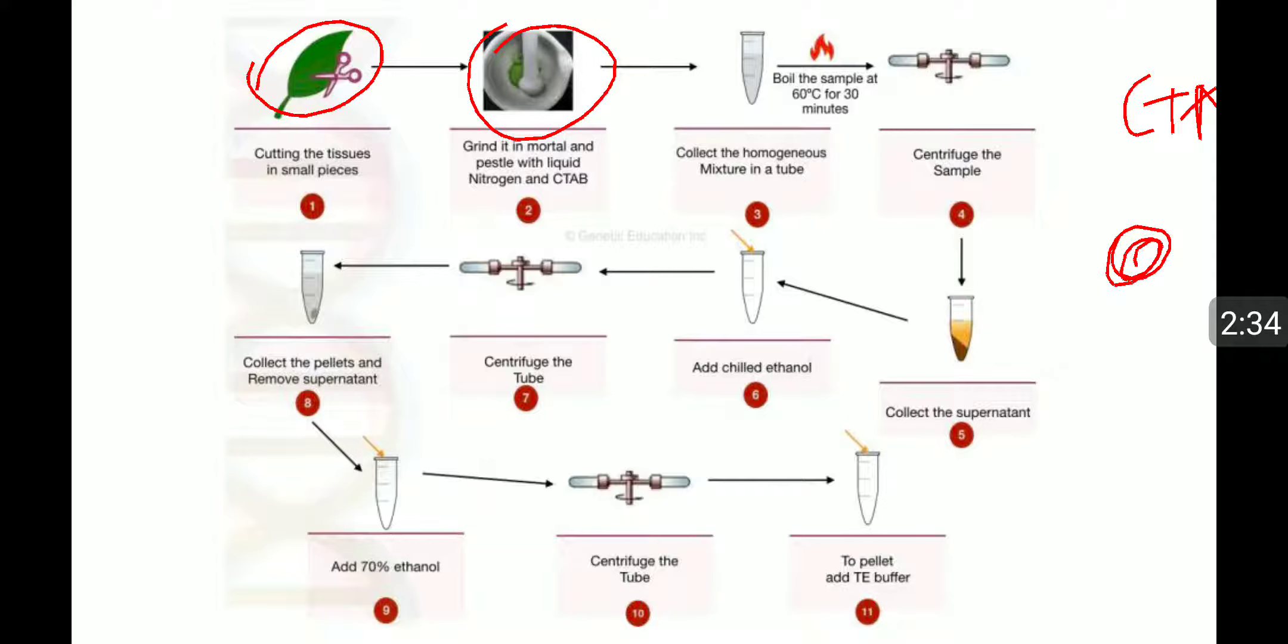After that, collect the homogeneous mixture in a tube and boil the sample at 60 degrees Celsius for 30 minutes, then centrifuge the samples. After centrifuging, collect the supernatant because the solid materials will remain in the tube.